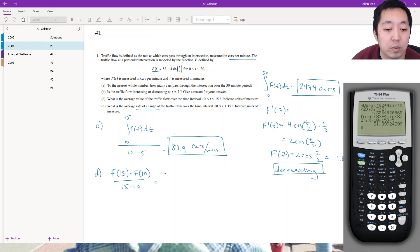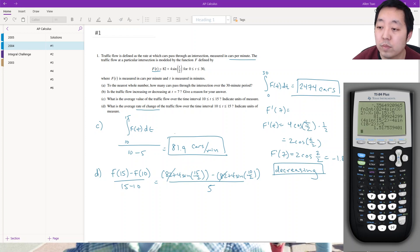So f(15) would be 82 plus 4 sine(15/2) minus 82 plus 4 sine(10/2), divided by 5. This is the average rate of change of f, which is 1.518, and that would be cars per minute squared because it's the rate of change of a rate of change.